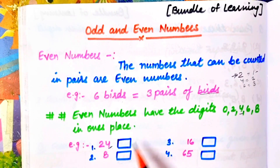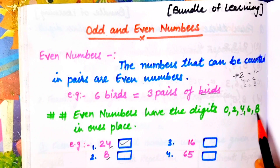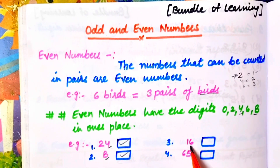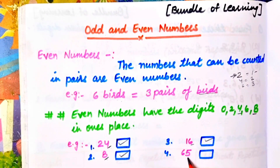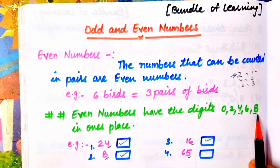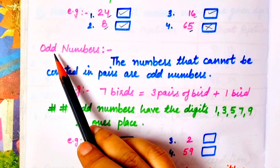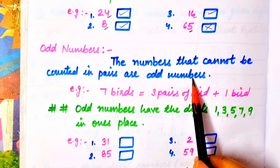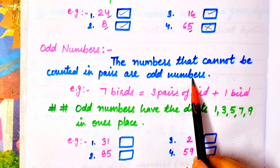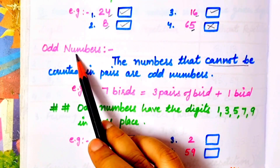Next number is 8 — 8 in the ones place, so it is an even number. Next number is 6 — 6 in the ones place, so it is an even number. Next number is 5 — 5 is not 0, 2, 4, 6, or 8 in the ones place, so it should not be our even number.